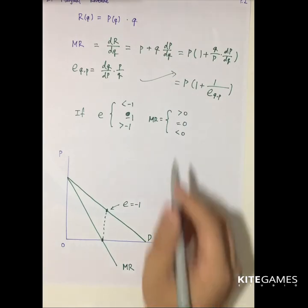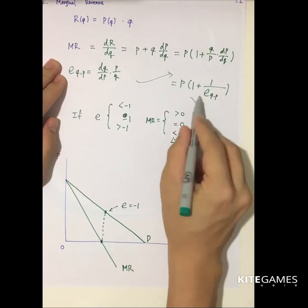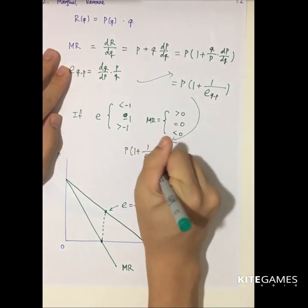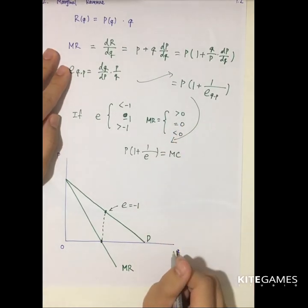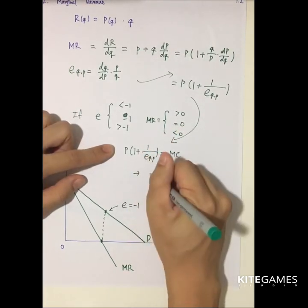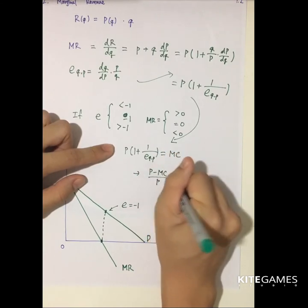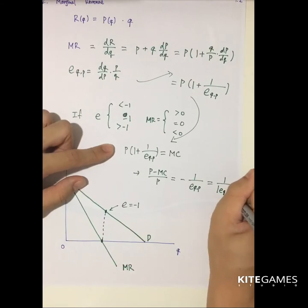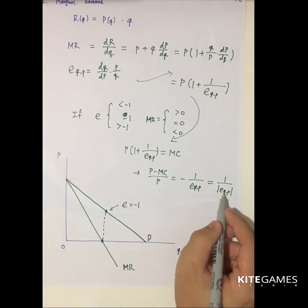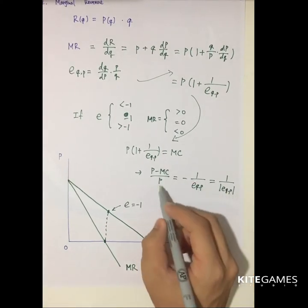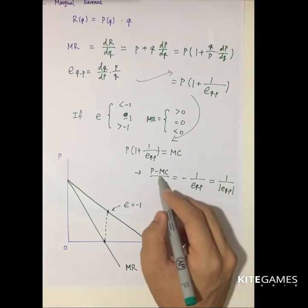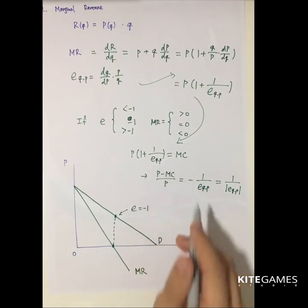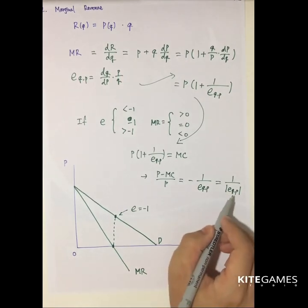Another interpretation: since MR = p times (1 + 1/e) and at equilibrium MR = MC, we can derive that (P − MC)/P = −1/e. Taking absolute values, this is the markup, also known as the Lerner index. If elasticity is high, the denominator is large, so the markup will be small. If elasticity is low — say there are no substitutes — then the firm can charge a higher markup. This shows the relationship between price elasticity of demand and the markup.